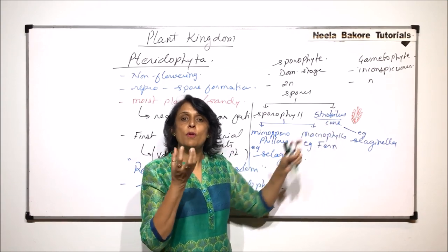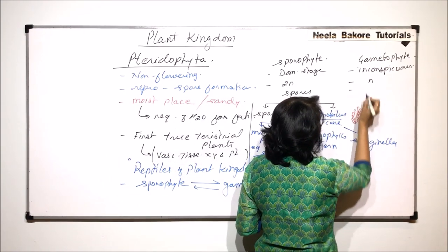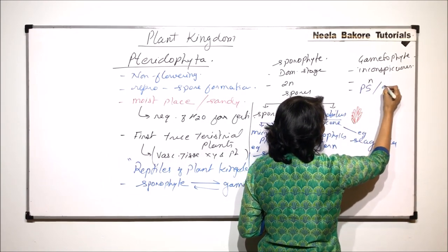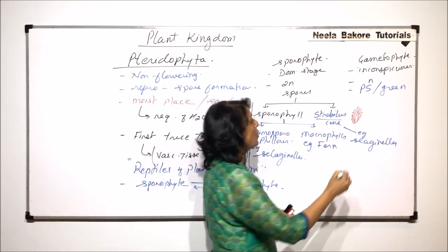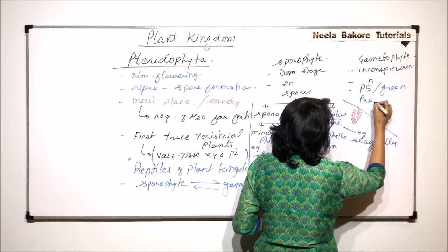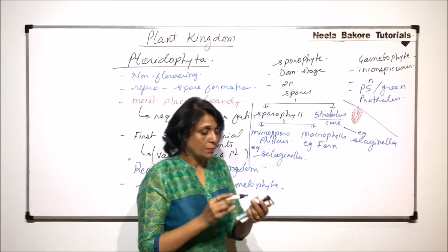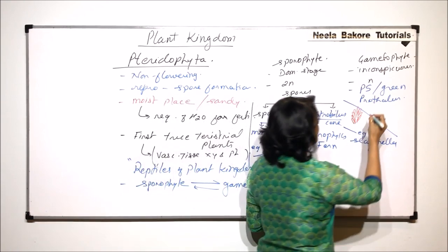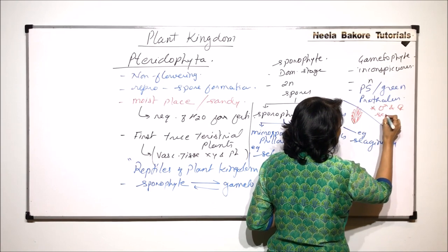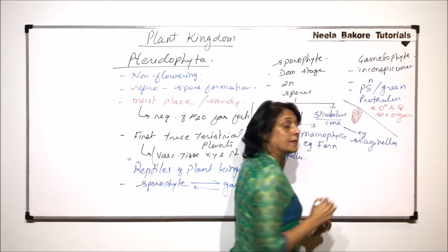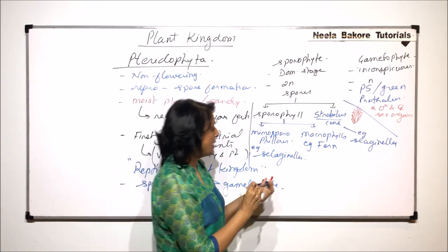The gametophyte is a photosynthetic green heart-shaped structure which is called prothallus. It is inconspicuous, but this is the gametophyte, and this is going to possess the male and the female sex organs where the gamete formation would take place.